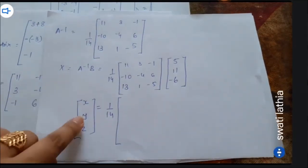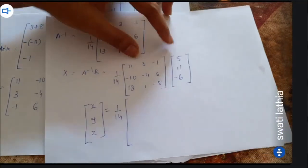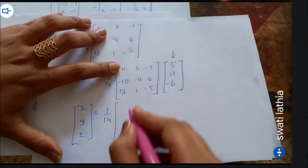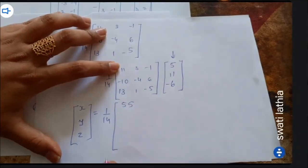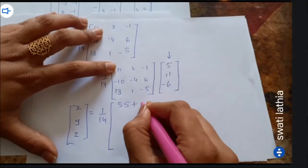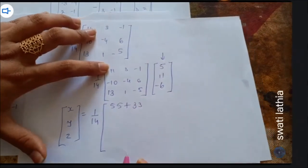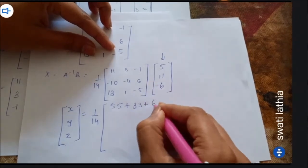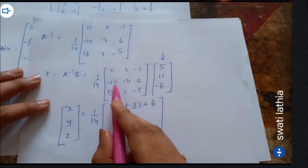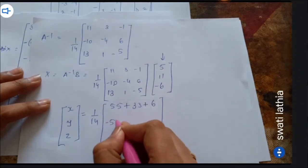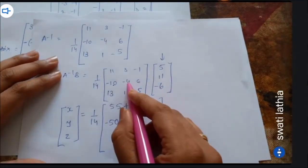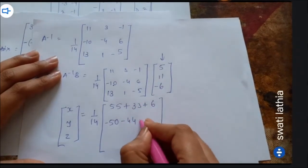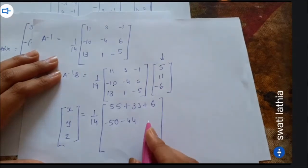We can write X instead. Starting multiplication: 1st row × 1st column: 11×5 = 55, plus 3×11 = 33, plus (−1)×(−6) = 6. Second row: 10×5 = 50, plus (−4)×11 = −44, plus 6×(−6) = −36. Third row: 13×5 = 65, plus 1×11 = 11, minus 5×(−6) = 30.